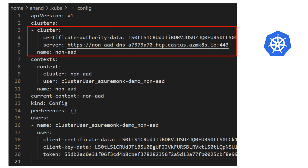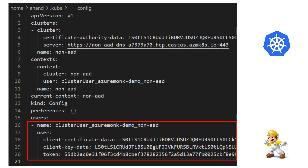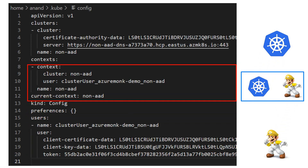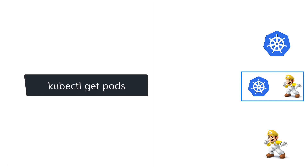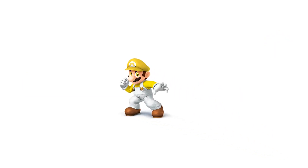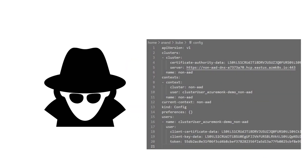The kubeconfig file first contains the cluster information along with the certificate authority data. We then have the user information, which in this case contains the client certificate data for the user. We also have the context, which is a combination of the user and cluster information. With this config, you can perform any cluster admin related tasks — but if somebody gets access to this file, it's like they stole the master key of the cluster, giving them full access. That's not a great situation.